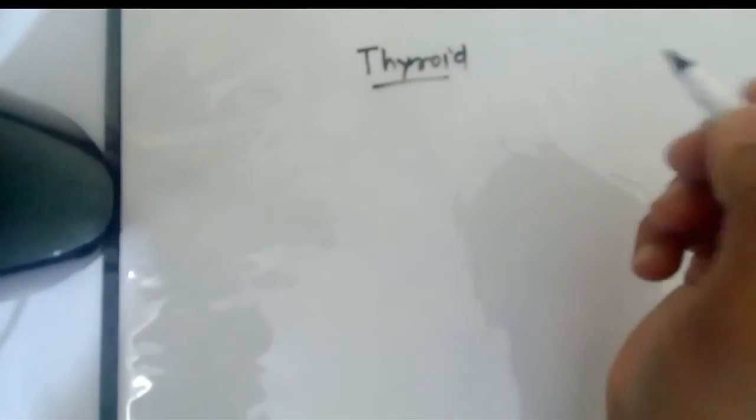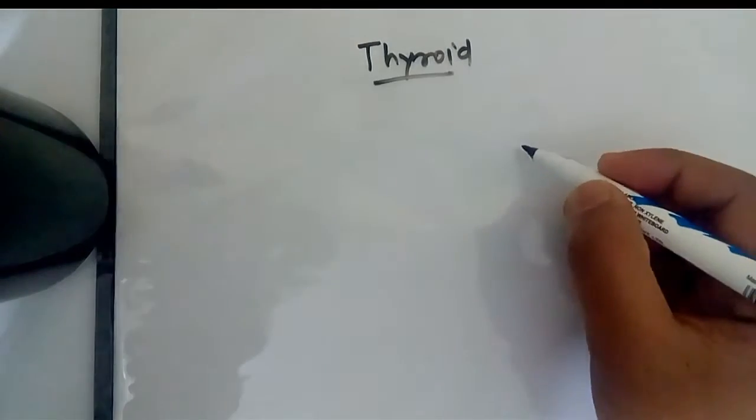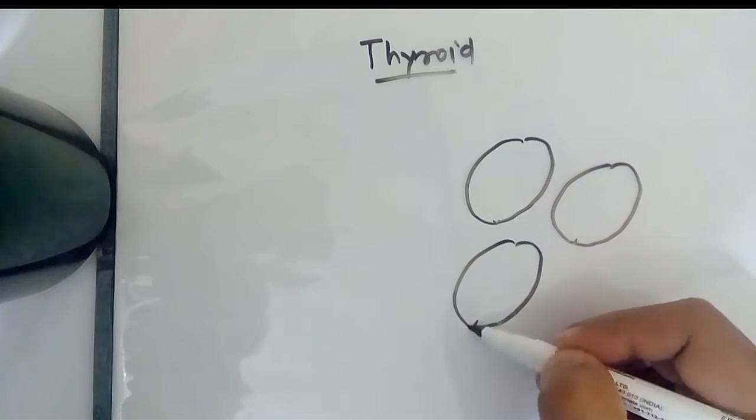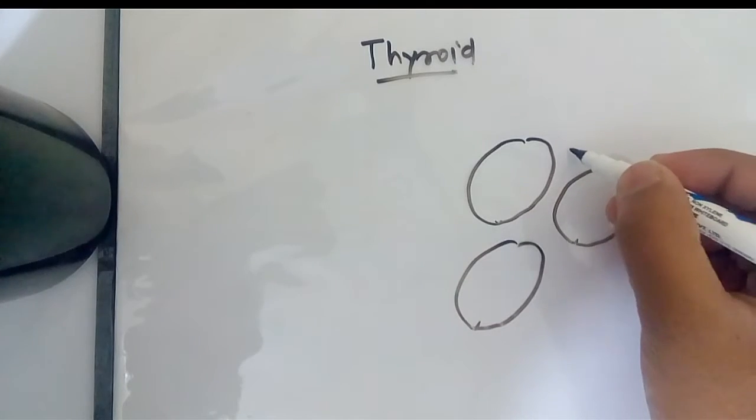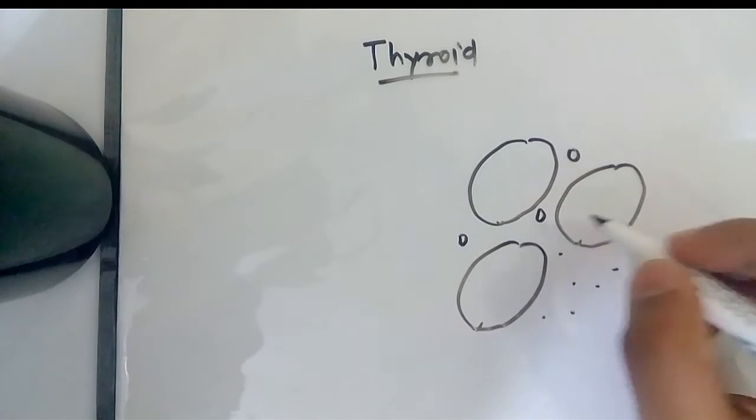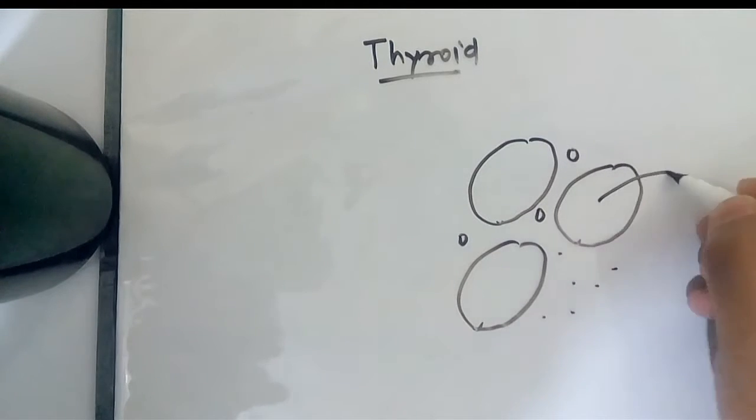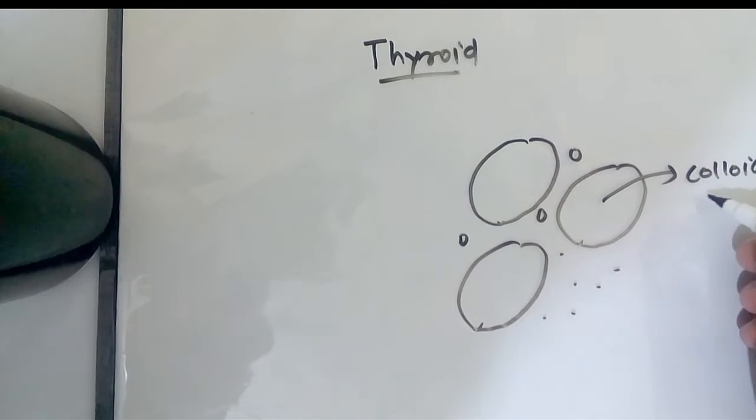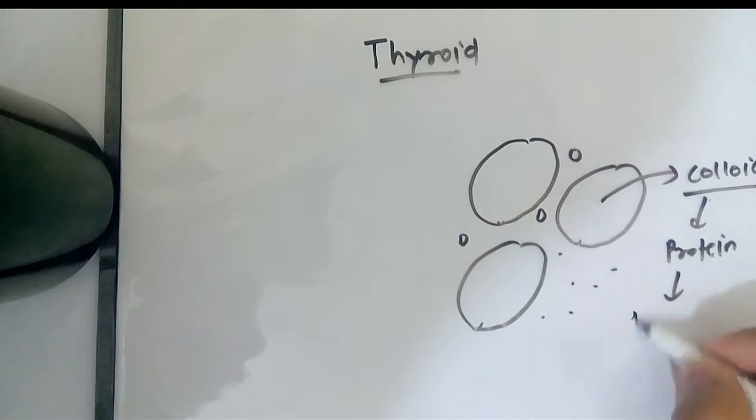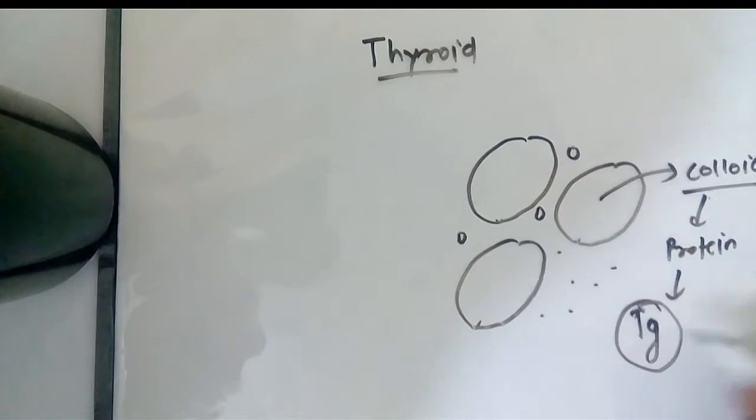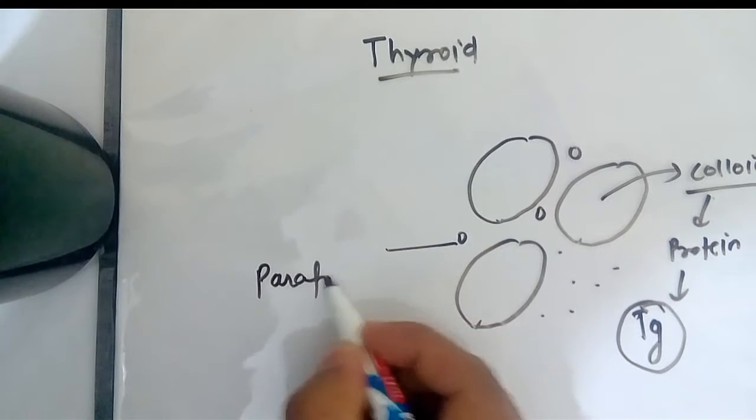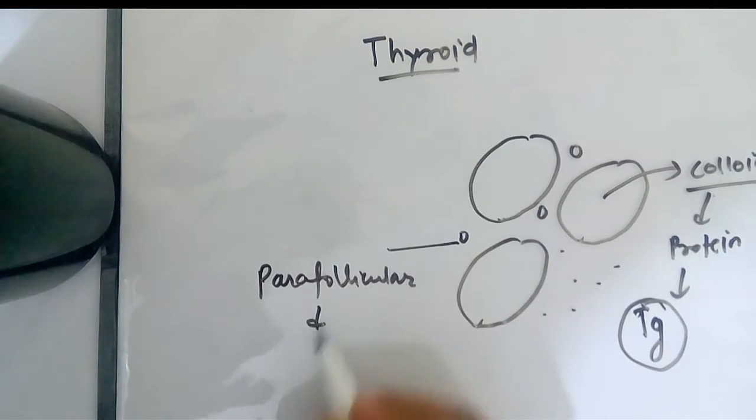The thyroid gland is made up of follicles. In between the follicles there are parafollicular cells. Inside the follicle there is colloid which secretes a protein known as thyroglobulin. The parafollicular cells secrete calcitonin.